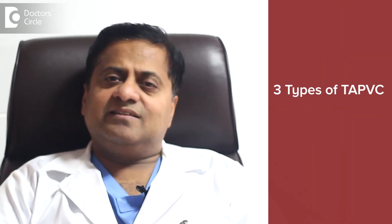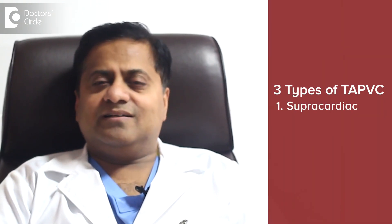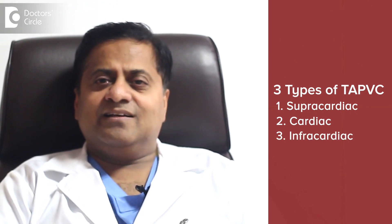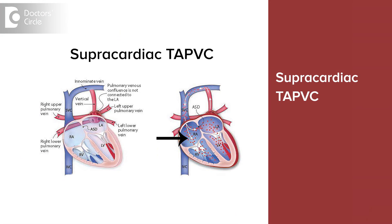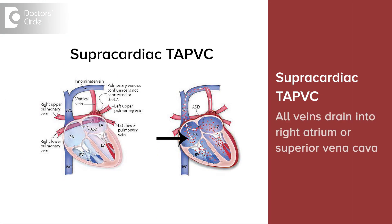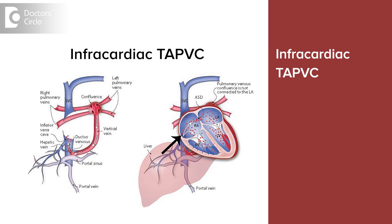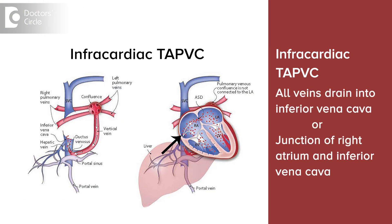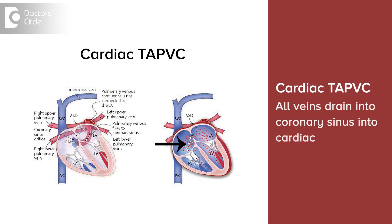There are three types of TAPVC: supra-cardiac, cardiac, and infracardiac. In supra-cardiac TAPVC, all the veins drain into the right atrium or into the superior vena cava through a connection, which we call a vertical vein. Similarly, in infracardiac TAPVC, through the vertical vein or a connection, it drains into the inferior vena cava or into the junction of the atria and inferior vena cava. In cardiac TAPVC, all four veins drain into the coronary sinus.